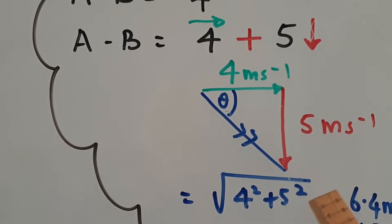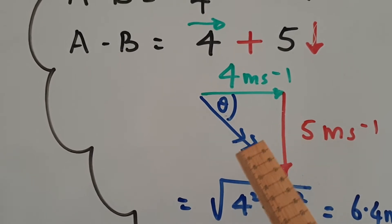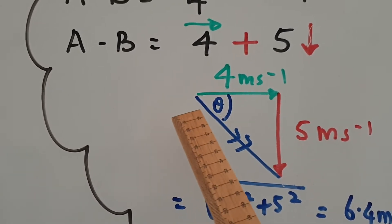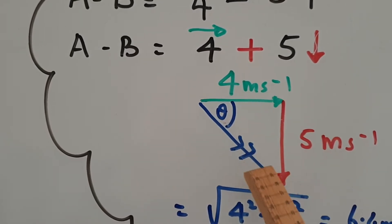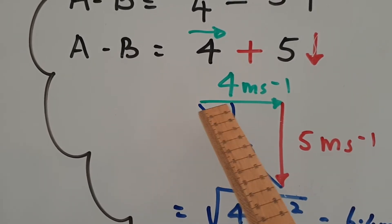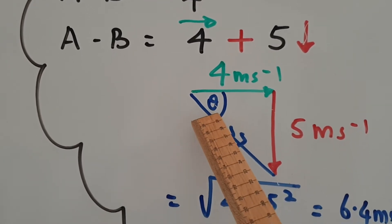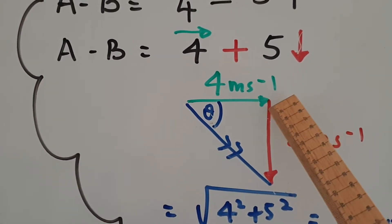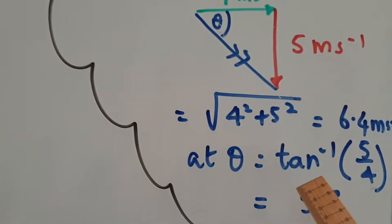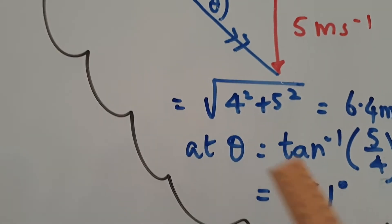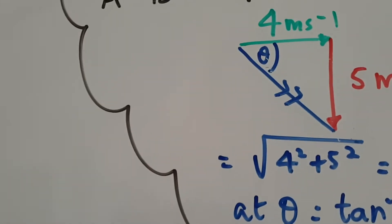Often you are asked to find the direction as well of the change or the difference between two. And usually you always find the direction where the tails of the arrow meet for any angle. So it's always where the tails meet. So this theta can be opposite over adjacent. So it would be tan inverse of 5 over 4 and you get 51 degrees. So that's how you do vector subtraction.